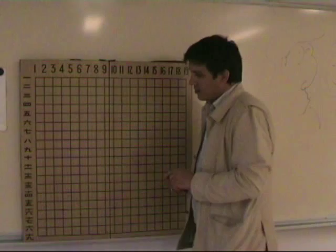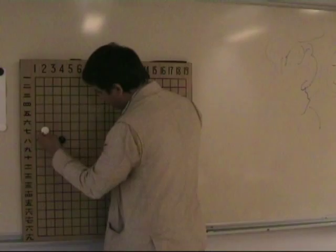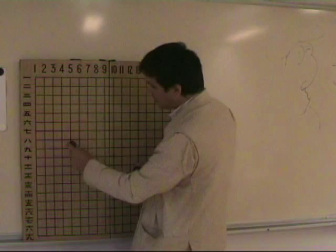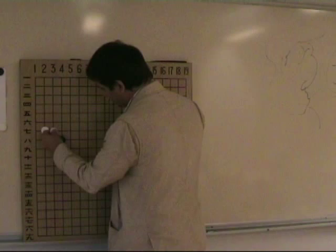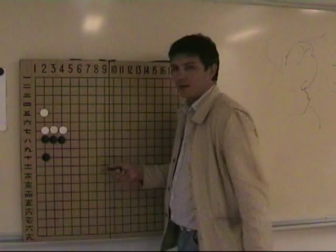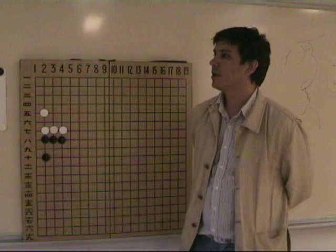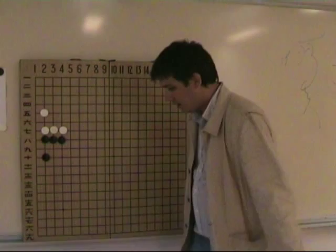What is really important in endgame, first of all, is to know the value of moves. For example, in this kind of situation, probably most people, maybe let's say average from 10 kyu down, maybe most people know that this kind of move here is worth two points. Let's analyze exactly why these two points.